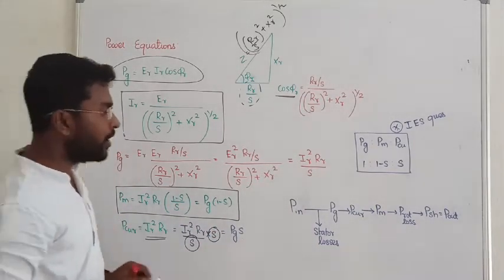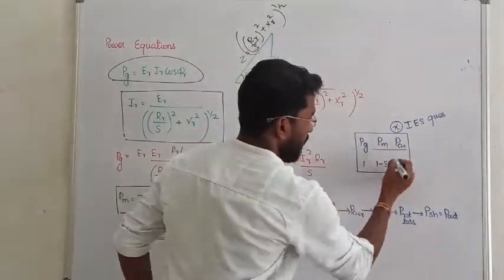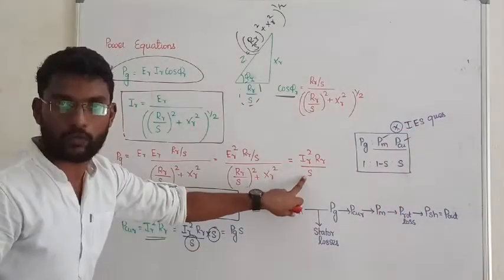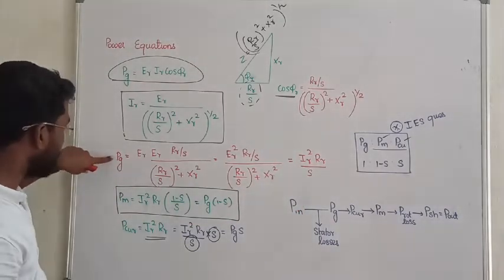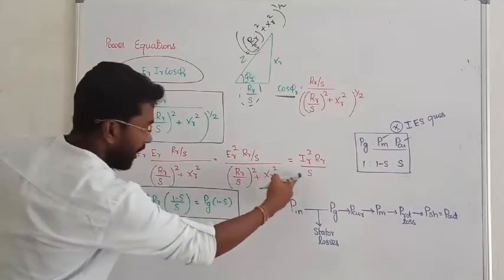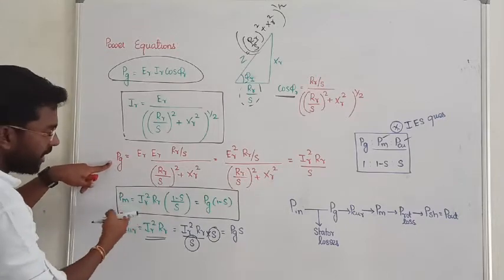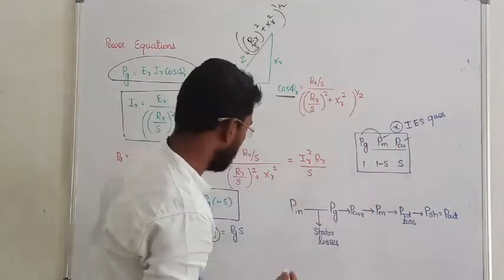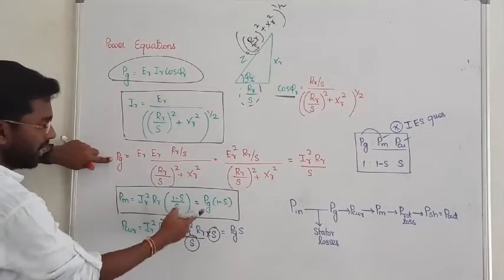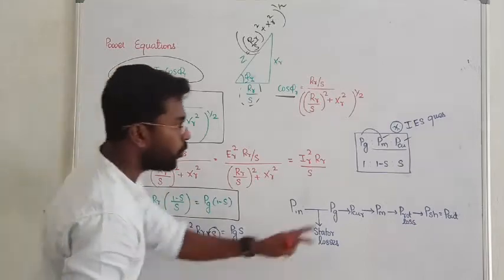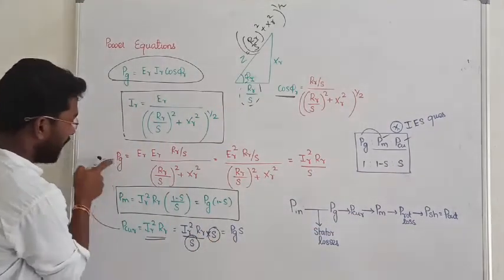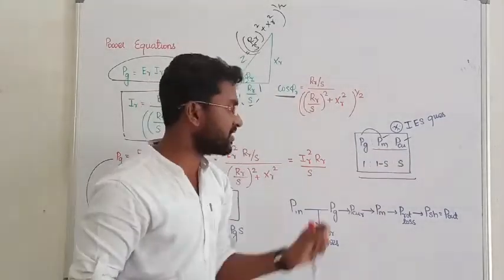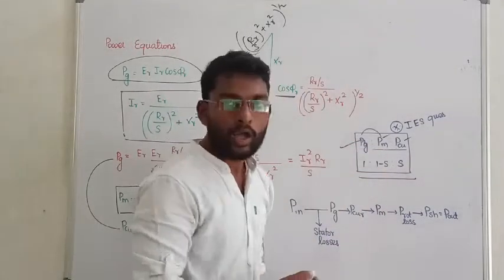Just multiply by the slip and you will get the value of rotor copper loss. Now, as an IES example — the ratio between the air gap power, mechanical power, and rotor copper loss. Air gap power is known. Mechanical power equals air gap power into 1 minus S. I_R squared by S terms cancel out. This ratio gives 1 minus S difference. So: air gap power to mechanical power to rotor copper loss is 1 : 1−S : S. That is the relationship between air gap power, mechanical power, and rotor copper loss.